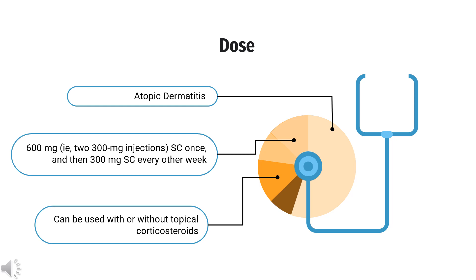Moderate to severe asthma: Indicated as add-on maintenance treatment for patients with eosinophilic phenotype or oral corticosteroid-dependent asthma. Dosing options: 100 mg subcutaneously once, then 200 mg every 2 weeks; or 600 mg subcutaneously once, then 300 mg every 2 weeks. For patients with oral corticosteroid-dependent asthma or comorbid moderate to severe atopic dermatitis: 600 mg initial dose, then 300 mg every 2 weeks.